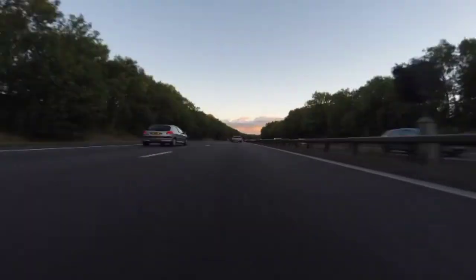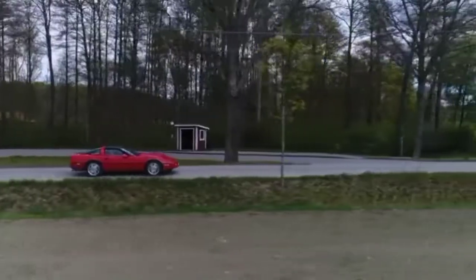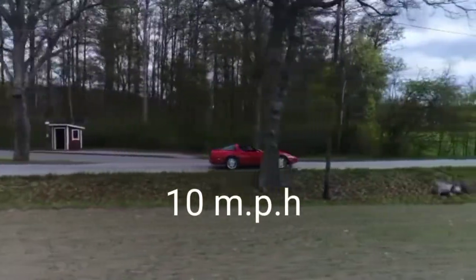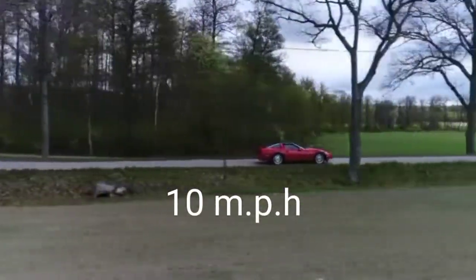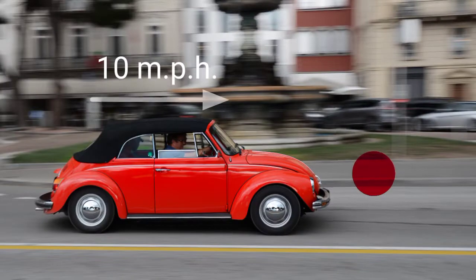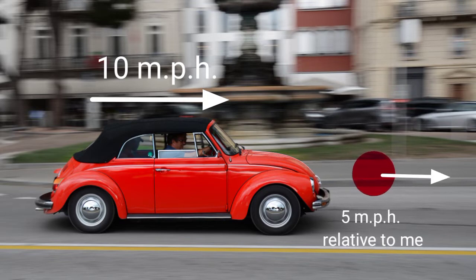I want you to imagine for a second that I'm driving past you in a car in this direction at 10 miles per hour. And then, for some weird reason, I decide to throw a ball out of the window. Now, this ball is traveling in the same direction that I'm going, and according to me, the ball travels at 5 miles per hour.